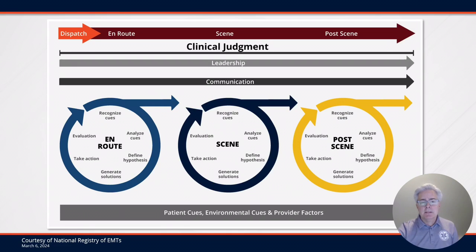Clinical Judgment uses clinical reasoning and decision making to make a judgment about the scene and the patient. We use leadership and communication when we manage a patient and a scene. The information we find on scene comes from the patients themselves, from environmental cues, or from information about the providers themselves. The model has six steps: recognize cues, analyze cues, define hypothesis, generate solutions, take an action, and finally evaluate to see if things are getting better, worse, or staying the same.